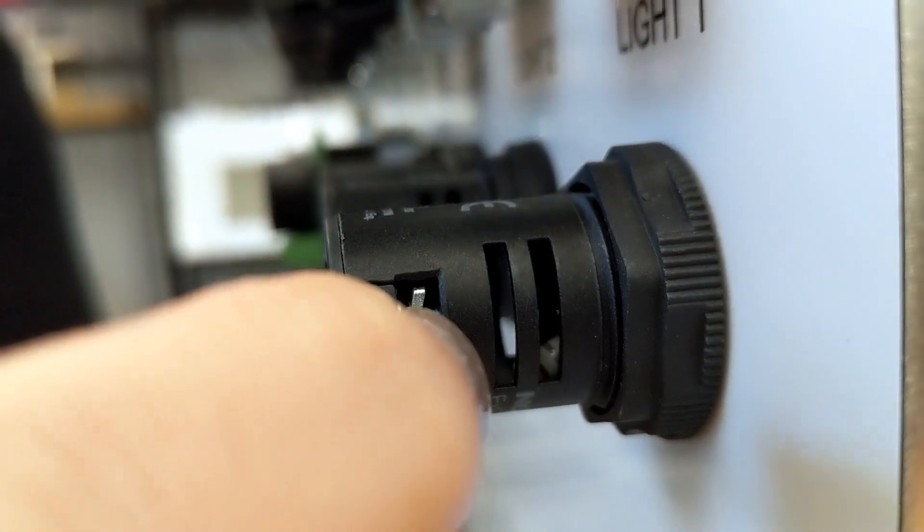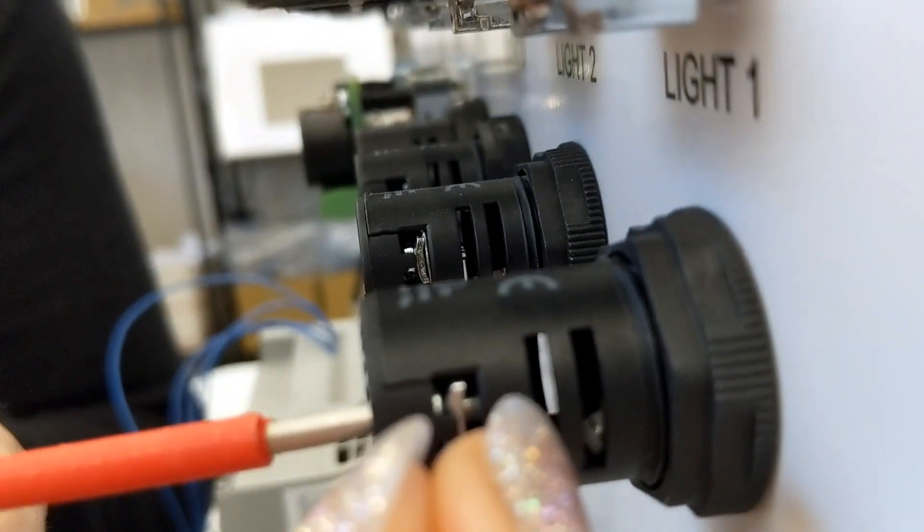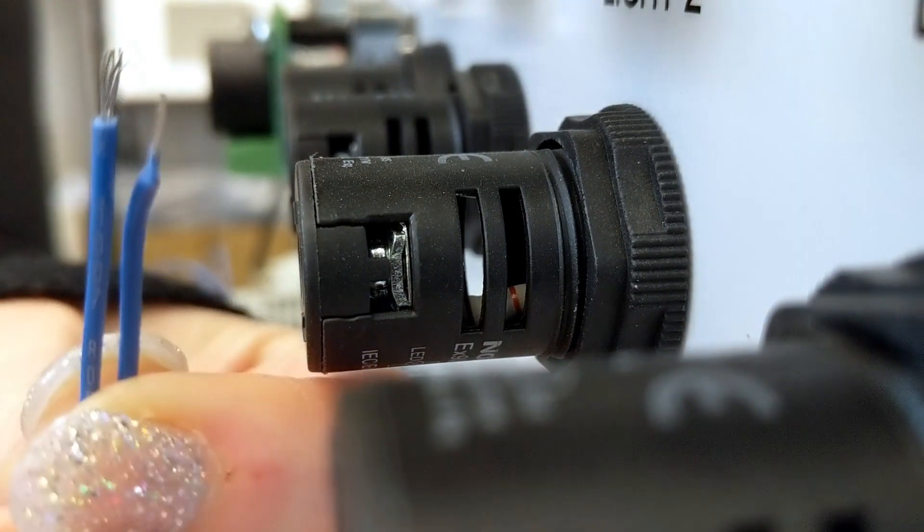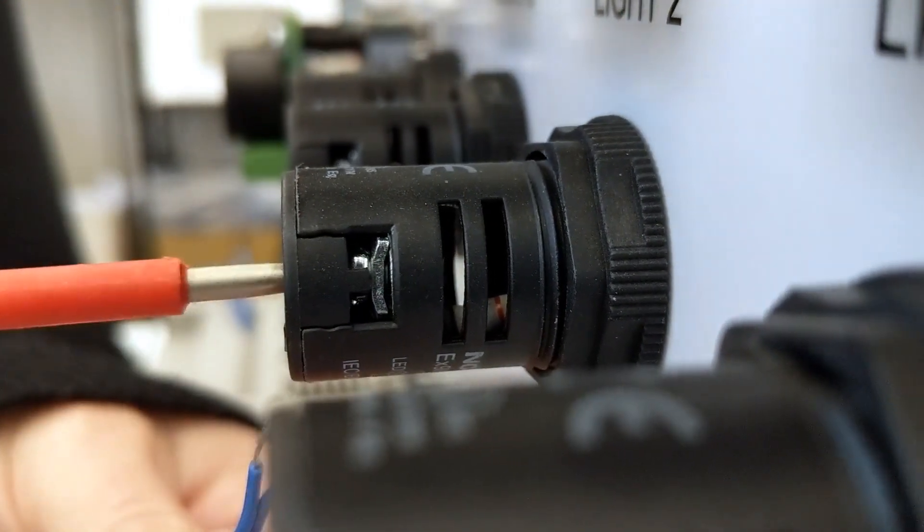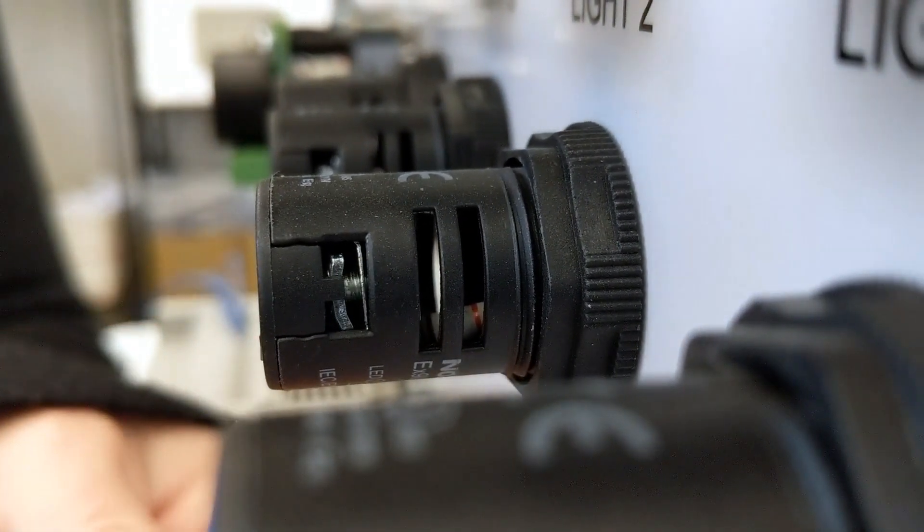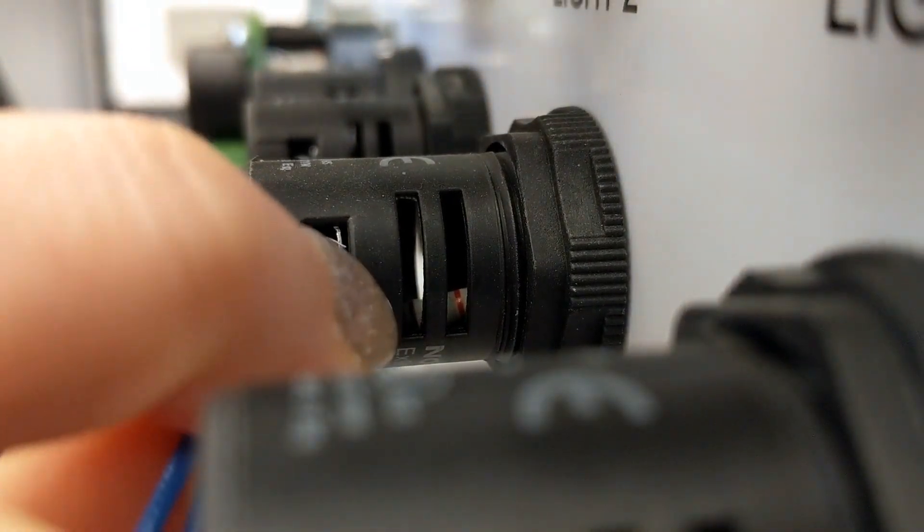Next, I'm going to connect the X2 common terminals to the lights. Just loop this from light to light, then loop it on the second set of gray terminal blocks to the left of the PLC, which is the minus 24 volt.